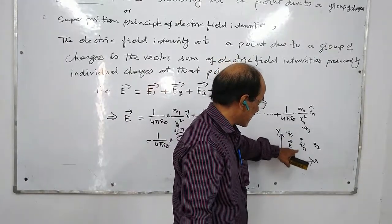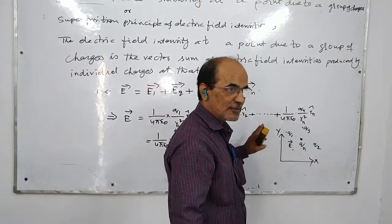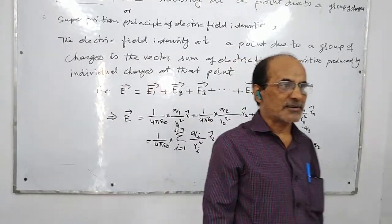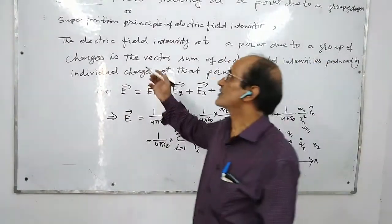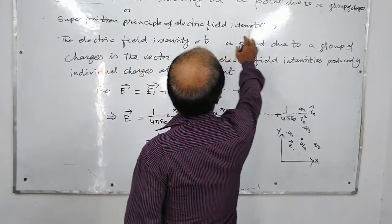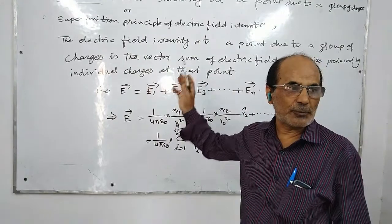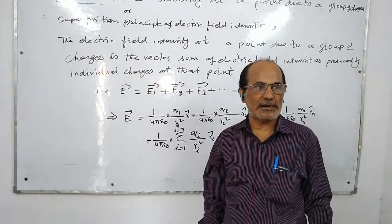So, the result of the variability between the vector sum. Electric Field Intensity at a point due to a group of charges, or Superposition Principle of Electric Field Intensity.